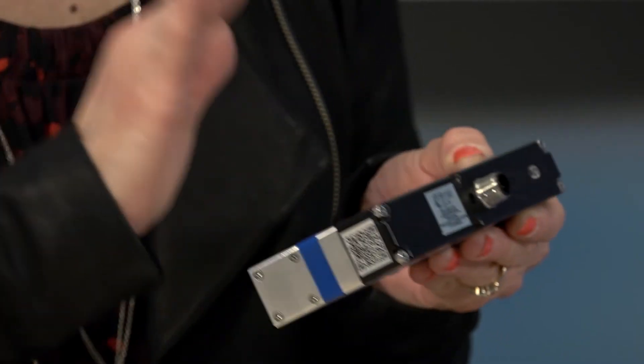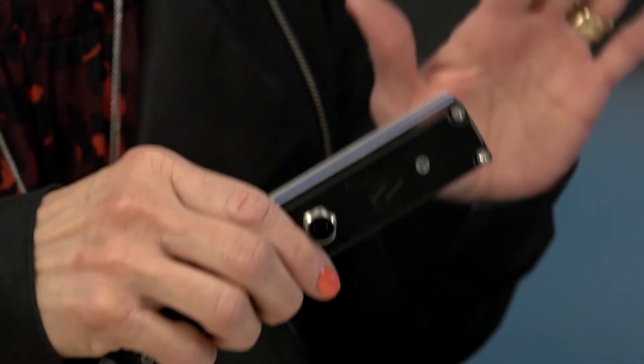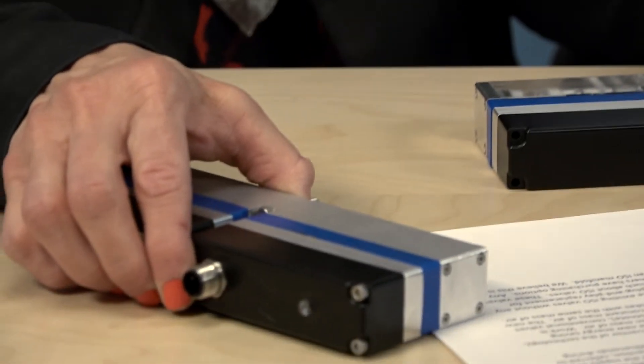It is plug and play. If you've got an ISO manifold of a particular size, you can literally just take your current ISO valve off, put ours on with two screws, and you're good to go. We've got the electronics set up so there are no other changes needed.